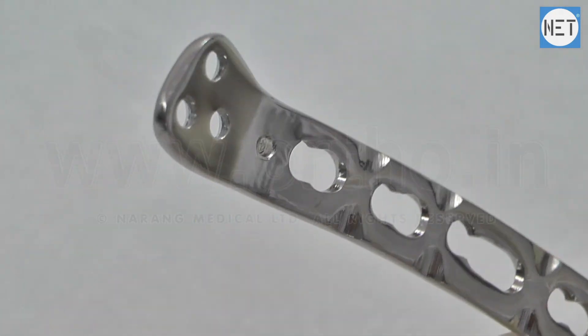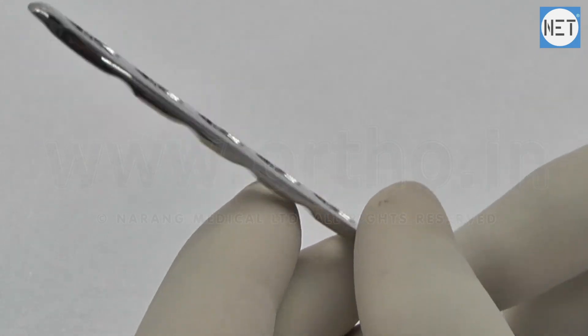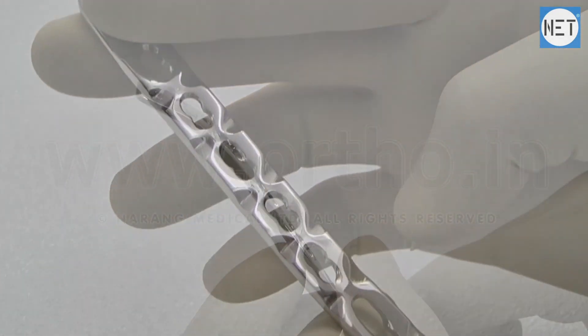Anatomically shaped plate fits over the lateral condyle of the humerus from dorsal side. Safety locking feature provides the angular stability.